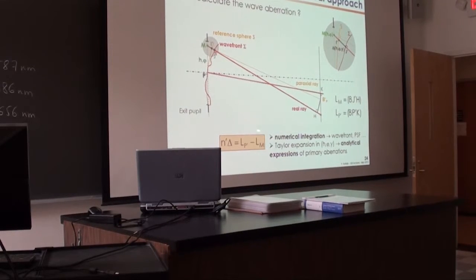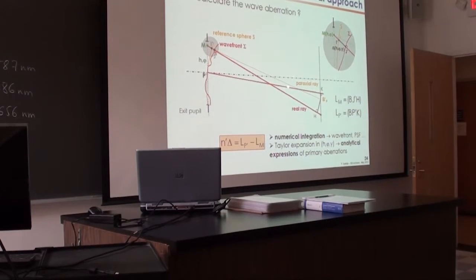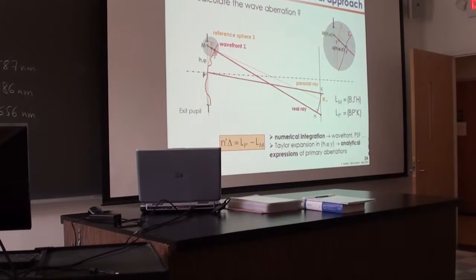This formula will be used by Oslo or any software to reconstruct the wavefront starting from ray tracing. The software takes a ray coming from B, propagates it, and integrates the distance all along until it reaches a plane. Then subtracting the same path, you get the optical path difference, and from there you can reconstruct a wavefront that is distorted with respect to the reference sphere.